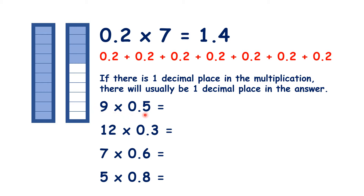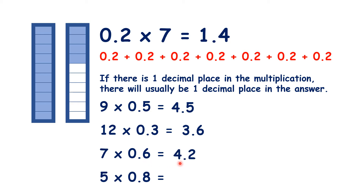9 times 5 is 45, so 9 times 0.5 is 4.5. 12 times 3 is 36, so 12 times 0.3 is 3.6. 7 times 6 is 42, so 7 times 0.6 is 4.2. And 5 times 8 is 40, so 5 times 0.8 is 4.0.